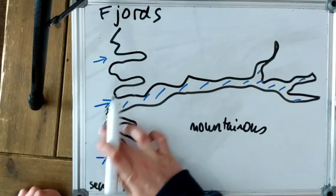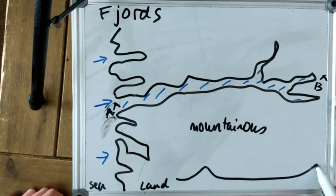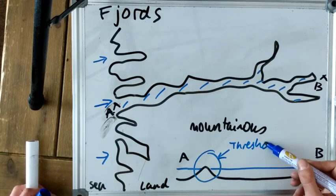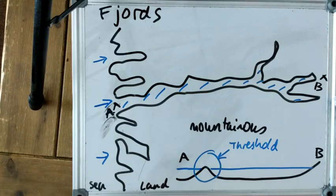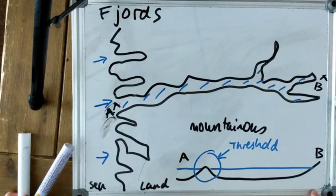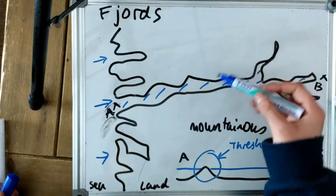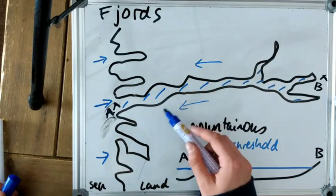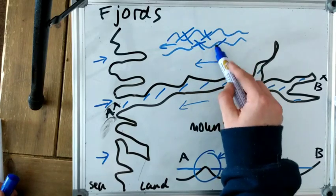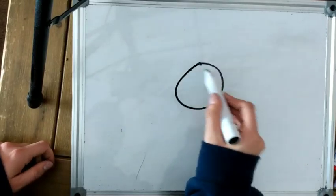Now the longitudinal profile: A is at the seaward end of the fjord and B is at the most inland point. There's a shallower part at the seaward end called the threshold, which results from lower rates of erosion where the ice thinned in warmer conditions. The plan form of a fjord is pretty straight without many meanders or wiggles like the ria. This is because when the glaciers retreated, they eroded any interlocking spurs and meanders present in the valley, resulting in a very straight plan form. So there you go — submergent landforms. Hope you enjoyed the video, see you next time.